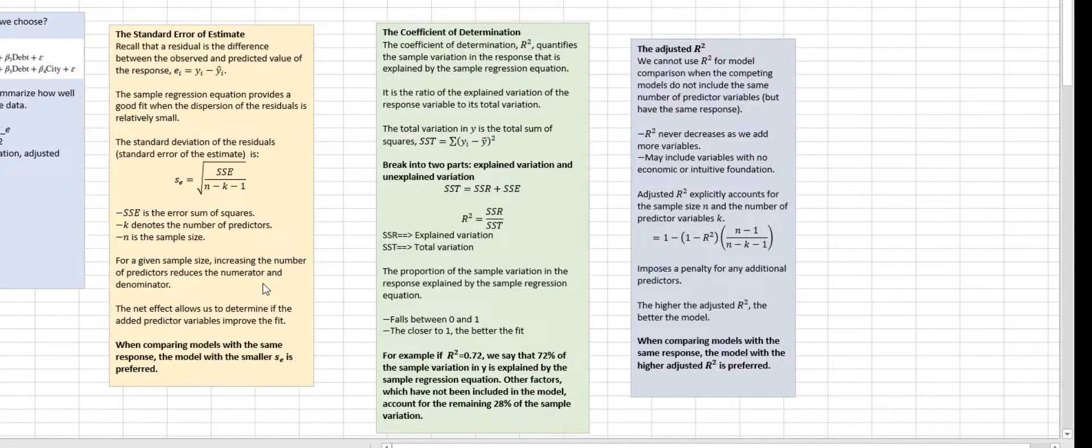The second method that we use for goodness of fit is the coefficient of determination. The coefficient of determination or R square quantifies the sample variation in response that is explained by the sample regression equation. It is the ratio of explained variation of the response variable to its total variation.